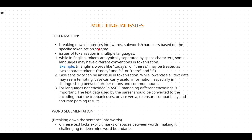What are the multilingual issues we face during tokenization? The first one: while in English, tokens are typically separated by space characters, some languages may have different conventions. When doing tokenization we break words where we find spaces. But even in English you face this issue — a word like 'today's' will be treated as two words: 'today' and 's'. Similarly 'theirs' is treated as 'there' and 's'.